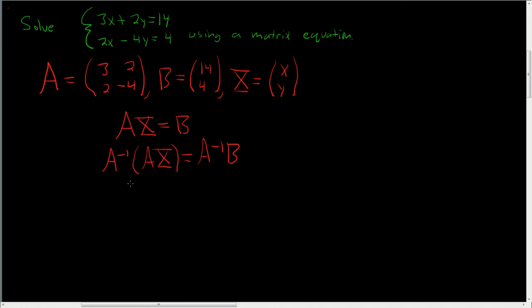A inverse times A is equal to the identity matrix. Now we skipped a step here. Matrix multiplication is associative. So instead of multiplying A times X and then multiplying it by A inverse, we first multiply A inverse by A, which gives us I, and then we multiply it by capital X. And this is equal to A inverse B.